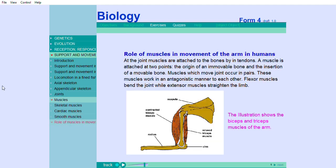Role of muscles in movement of the arm in humans. At the joint, muscles are attached to the bones by tendons. A muscle is attached at two points: the origin on an immovable bone and the insertion on a movable bone. Muscles which move joints occur in pairs. These muscles work in an antagonistic manner to each other.